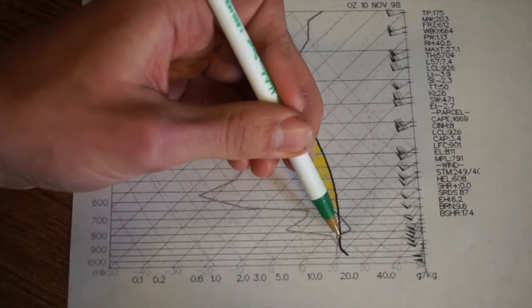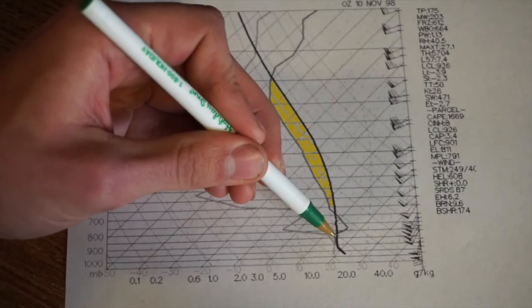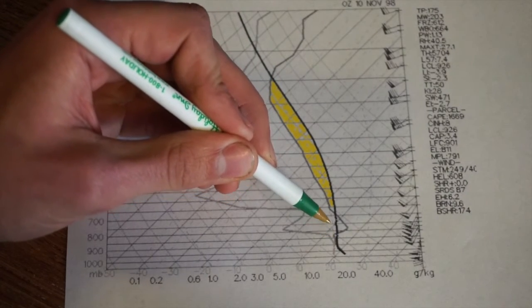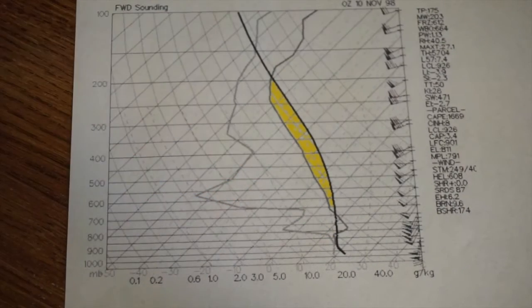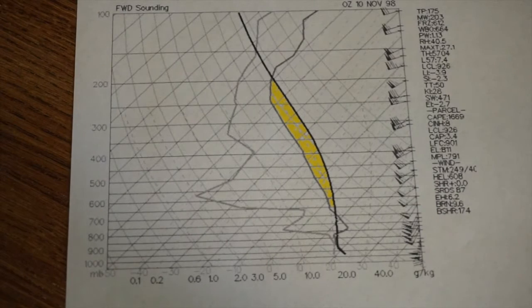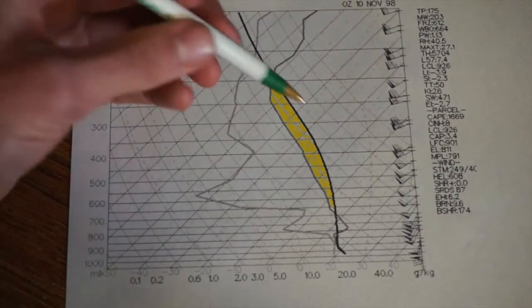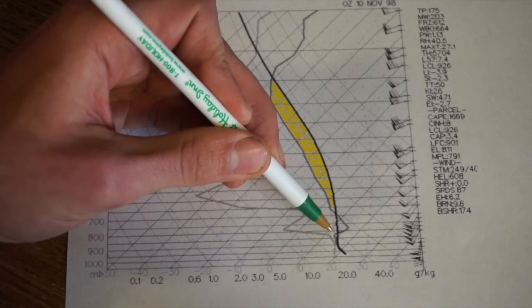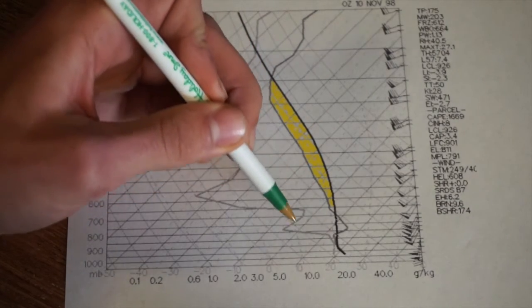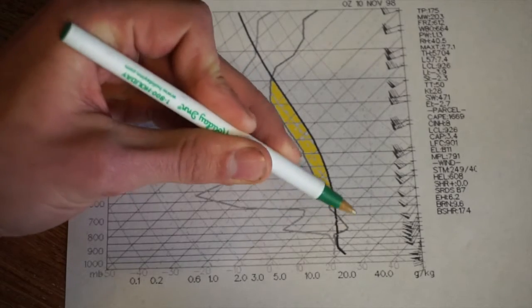Let's pretend this cap was non-existent and this gray line just continued straight up. You would think that would make it good for thunderstorms because air can freely rise. What that does is prevent any buildup of pressure, so throughout your whole day, you just have a bunch of cumulus clouds all over the place sitting in this area.